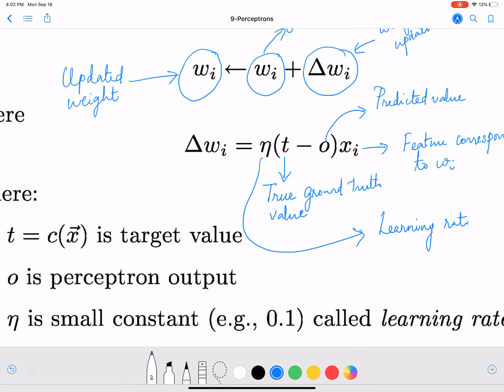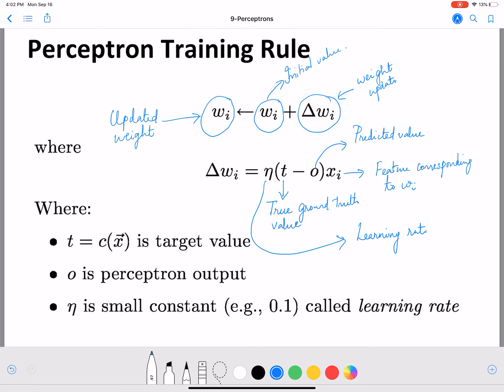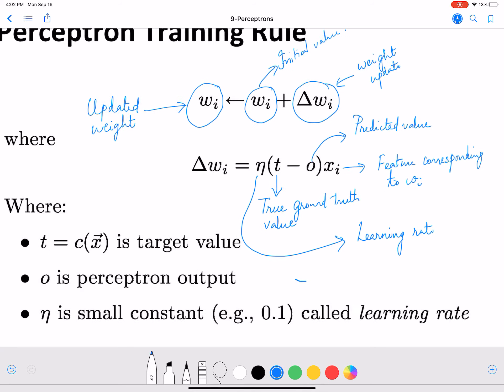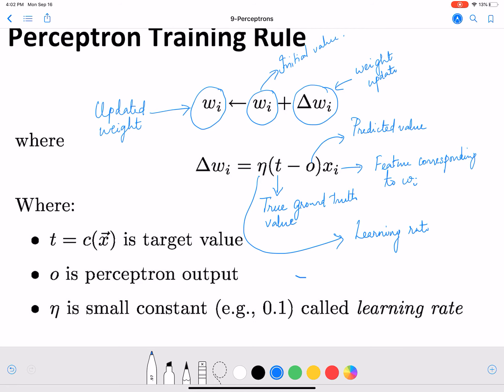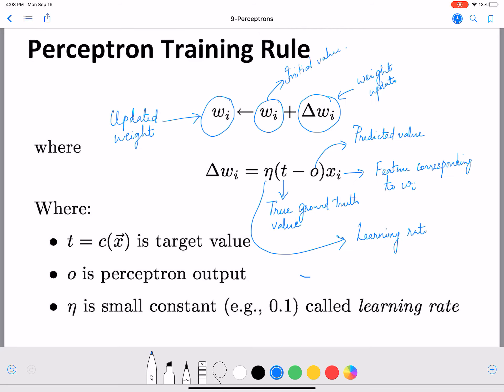number that determines how much of this error matters. If you think about this, t minus o is the error, times x_i—x_i is the feature in question. That's why we're adding that to our weight.